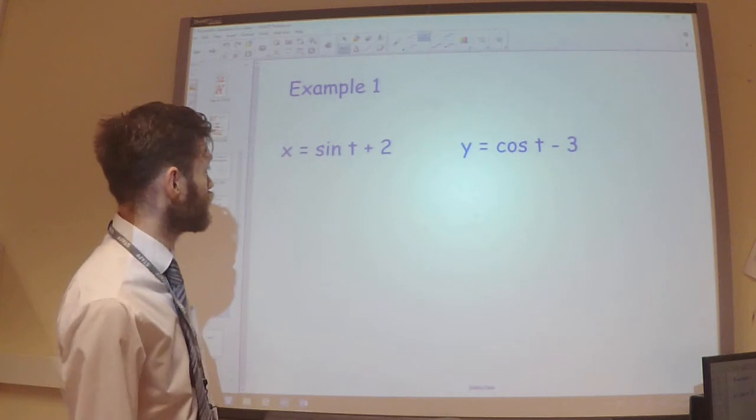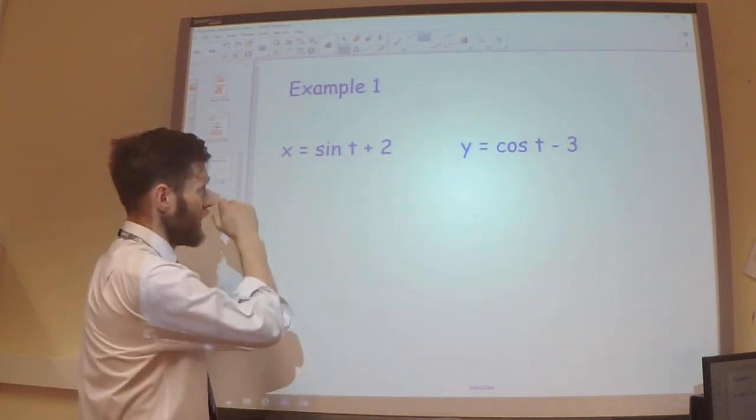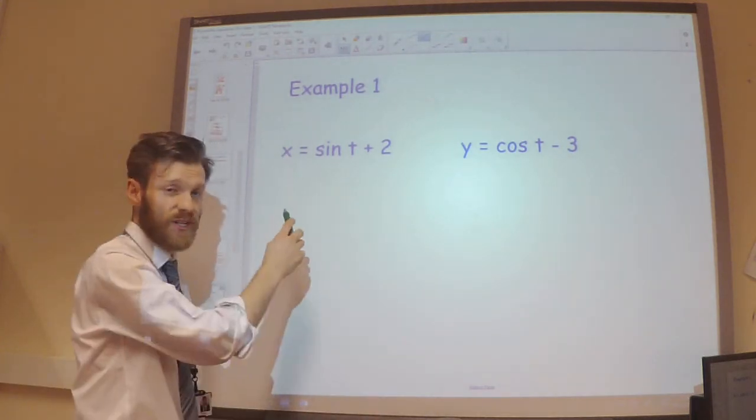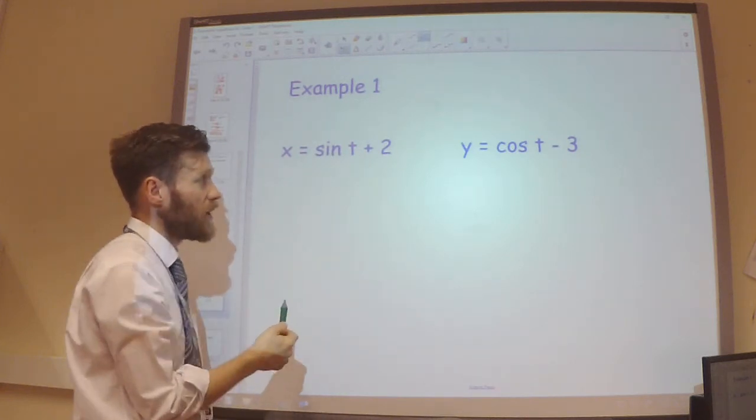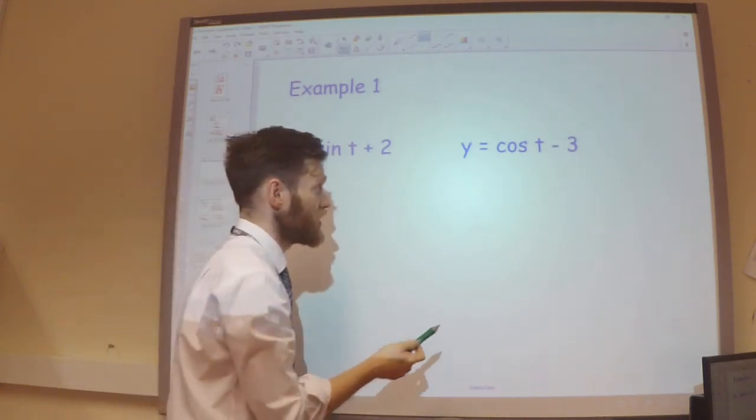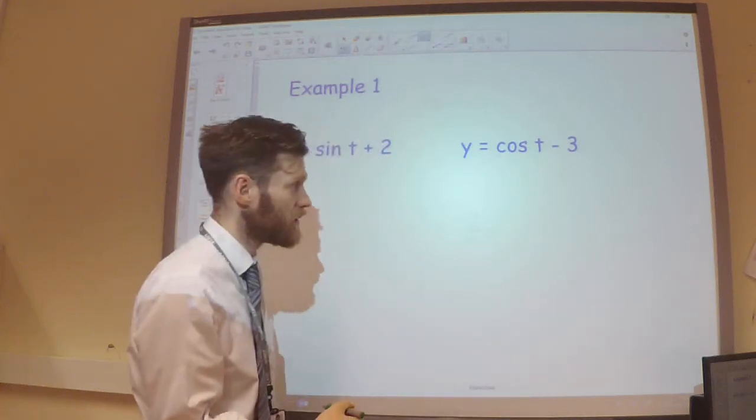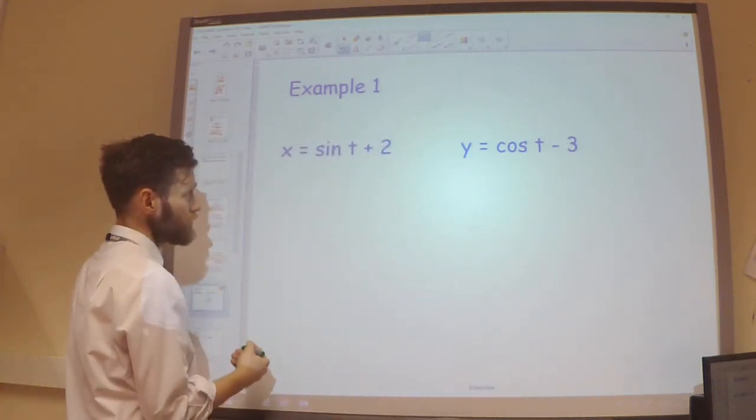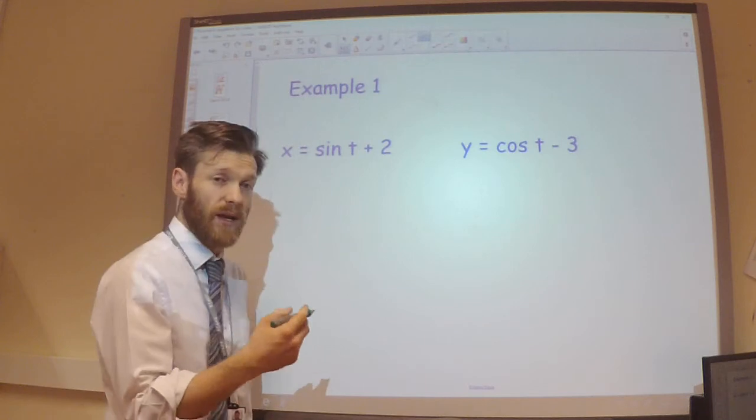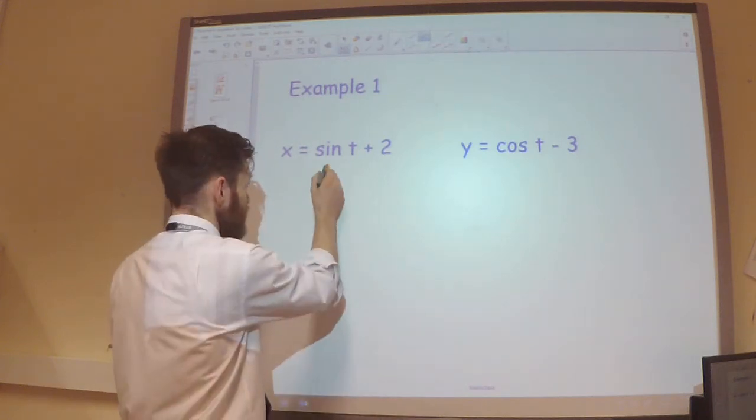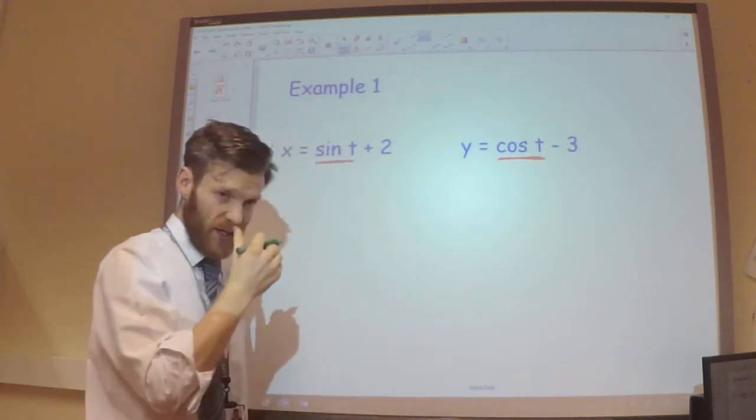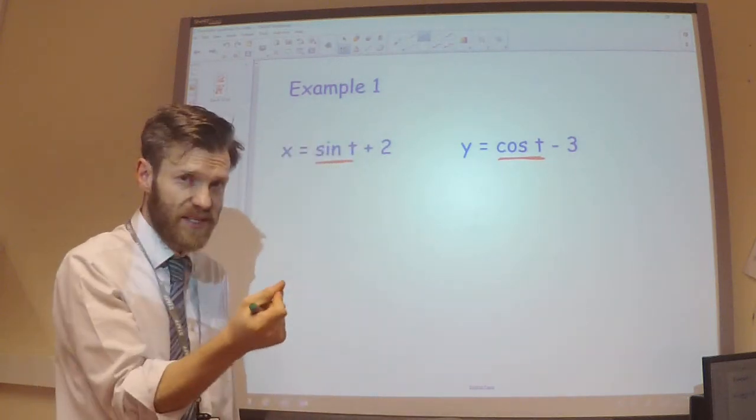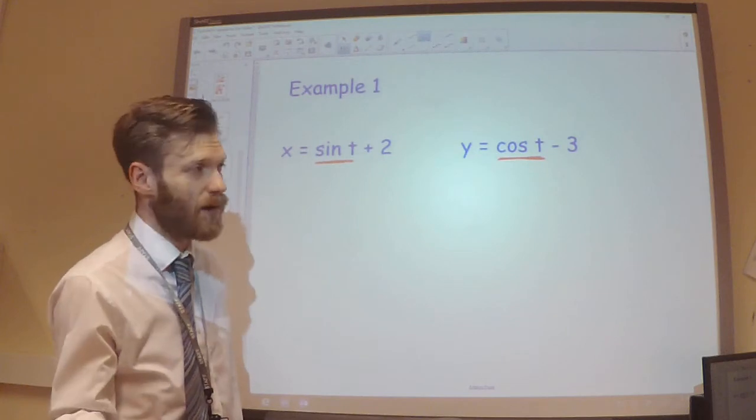So for example, I've got here that my x-coordinate is given in terms of sine t plus 2. And my y-coordinate is given as cos t minus 3. So, I can see I've got a sine t here and a cos t here. So if I want to try and bring these two things together, well I know that sine squared plus cos squared is 1.